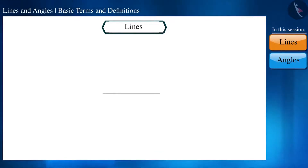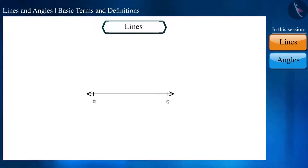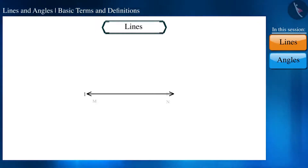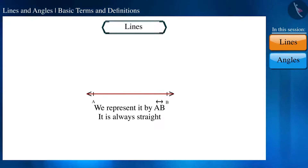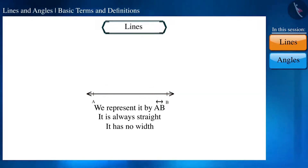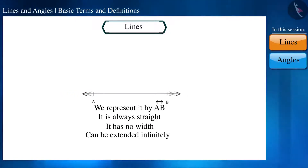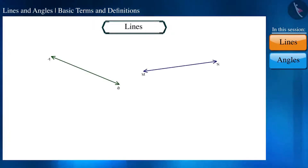As we know, lines look somewhat like this. We represent them by AB, PQ, MN, and sometimes by small letters like L, M, and N. Lines are always straight and have no width. The arrow symbol reflects that a line can be extended infinitely in both directions.